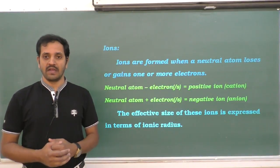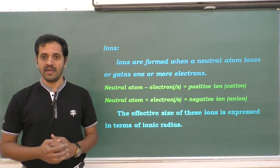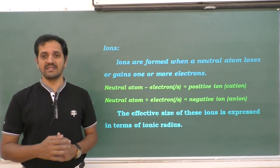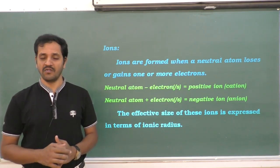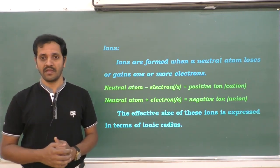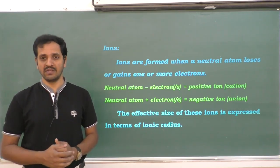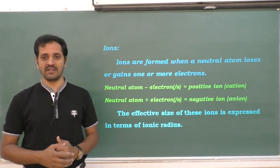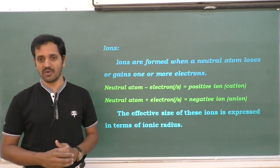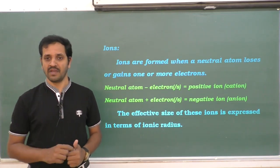Hello everyone. In this online session I am starting with ionic radius. As you are aware, ions are formed when a neutral atom gains one or more electrons, or when a neutral atom loses one or more electrons from its valence shell. When a neutral atom gains one or more electrons, a negative ion or anion gets generated. Similarly, when a neutral atom loses one or more electrons, a positive ion or cation gets generated.